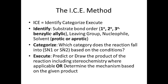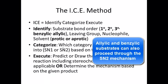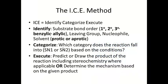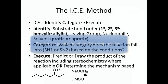Then you categorize — which category does the reaction fall into based on the conditions? For the SN1 mechanism, protic solvents increase the rate of reaction, and secondary, tertiary, allylic, and benzylic substrates all favor that mechanism. For the SN2 mechanism, aprotic solvents increase the rate of reaction and primary and secondary substrates favor it. Once you've identified everything and determined whether the mechanism is SN1 or SN2, then you execute.